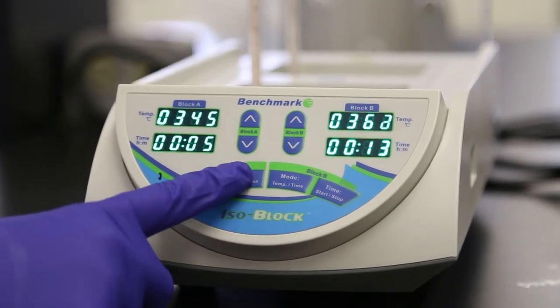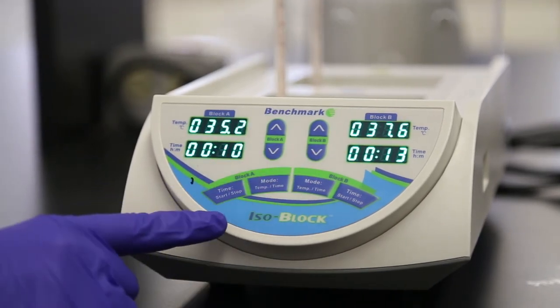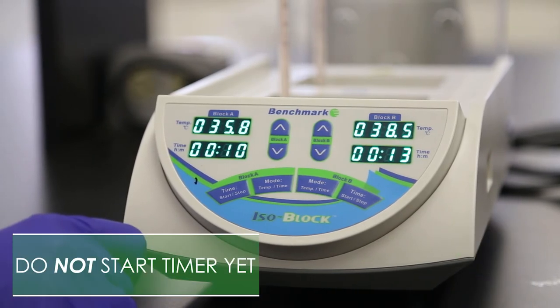To use the built-in timer, press MODE-TEMP-TIME for block A twice to select the time setting for block A. The last digit of the selected setting will flash. Note, the display includes hours and minutes. Using the block A arrow keys, press and hold the up or down to set the timer to 10 minutes. Don't start the timer yet.